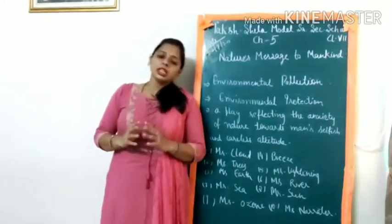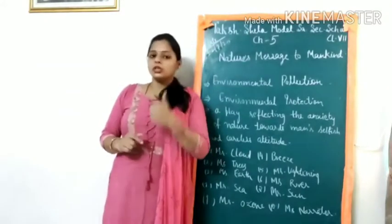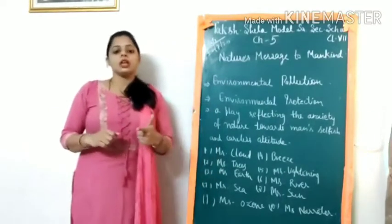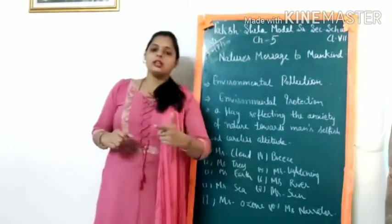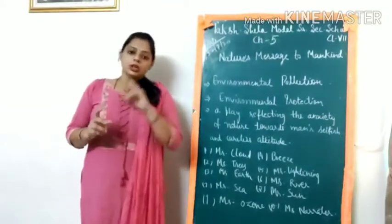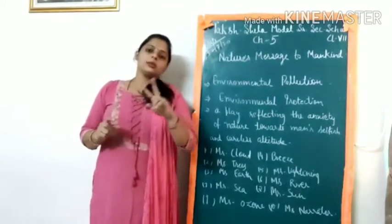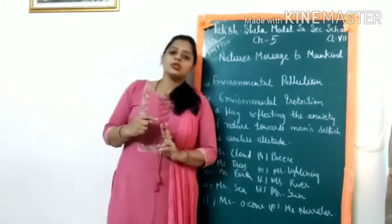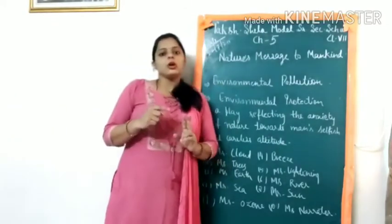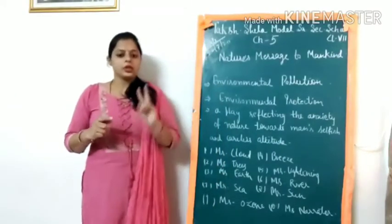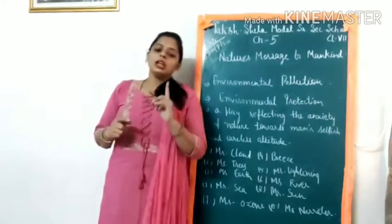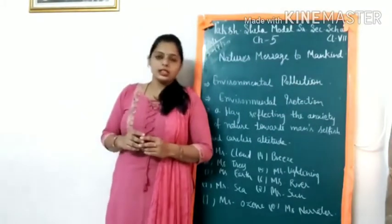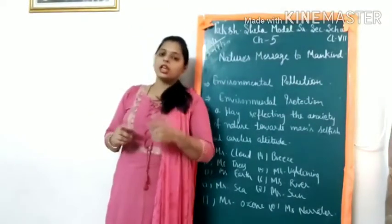Pollutants can be of two types: the first one is natural pollutants and the second one is man-created pollutants. Natural pollutants can be such as volcanic ash from volcanic eruptions.